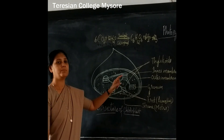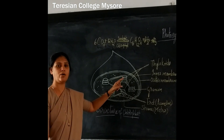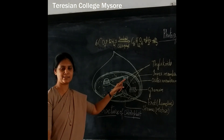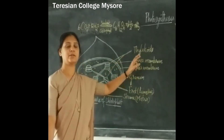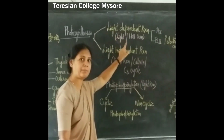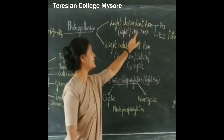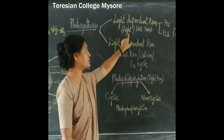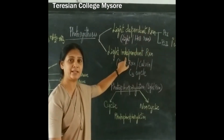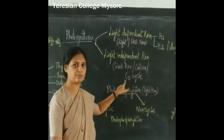The thyloplasts play an important role in the photosynthesis, consisting of pigment system 1 and pigment system 2. Photosynthesis is carried out by two reactions: one is light-dependent reaction, the other one is light-independent reaction. The light-dependent reaction is also called as a light reaction or green reaction, whereas the light-independent reaction is called as a dark reaction or Calvin cycle or secret cycle.